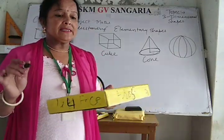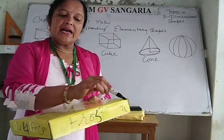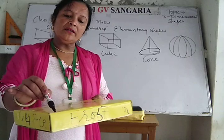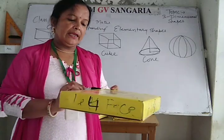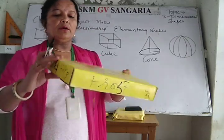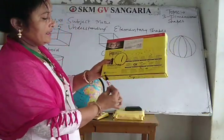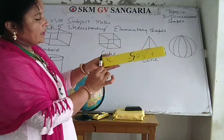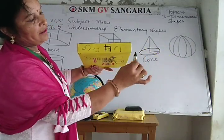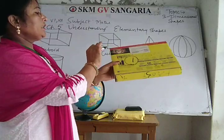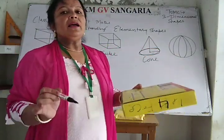What about edges? Edges are here: one, two, three, four, five, six, seven, eight, nine, ten, eleven, and twelve. So there are a total of twelve edges.